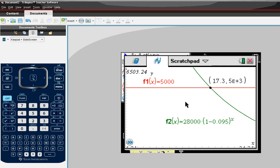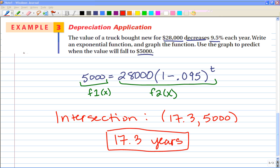So putting that back into our terms of our function or our situation, we will get that it will take 17.3 years for this truck to decrease to a value of $5,000 from the 28,000.